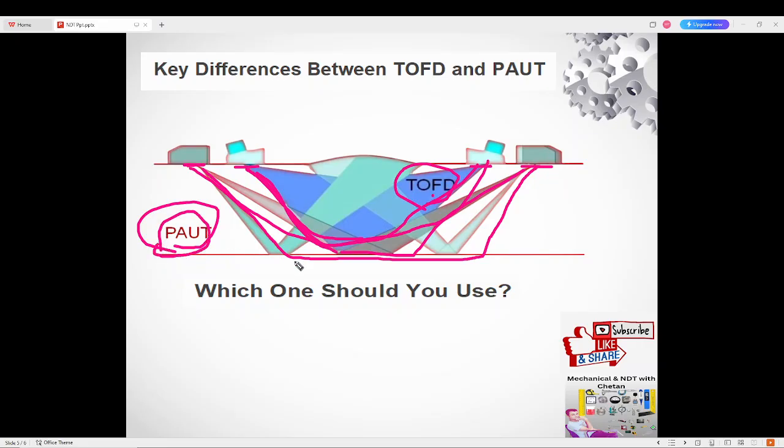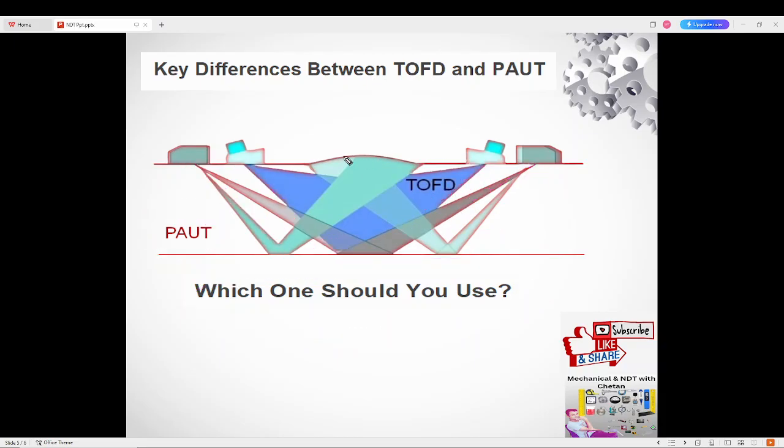So which technique is better? If you need precise defect sizing, go for TOFD. And if you need to inspect complex structures or need a versatile tool, PAUT is a better option. In many cases, these two techniques are used together to get the best results.